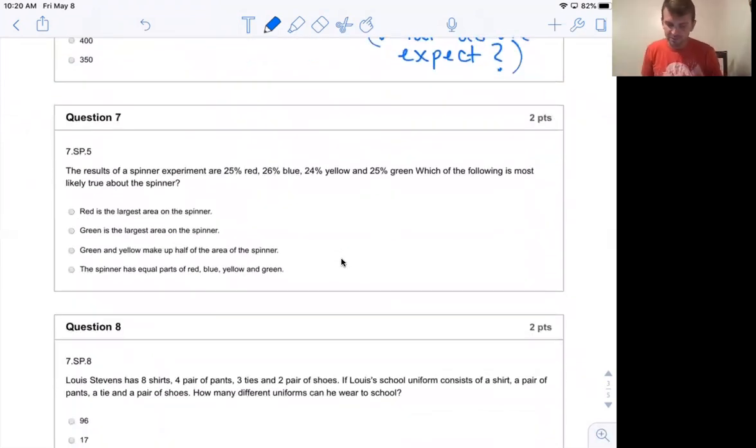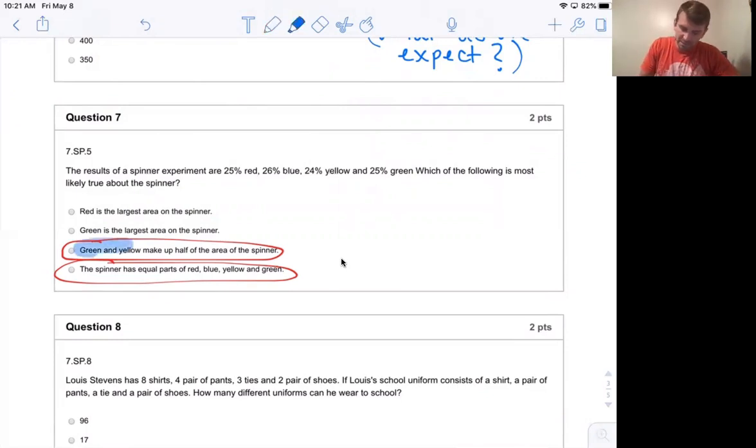Number seven, the results of a spinner experiment are 25% red, 26% blue, 24% yellow, and 25% green. Which of the following is most likely true about the spinner? So there's a couple of questions on our answers that are really, really close. Those are that green and yellow make up half the area of the spinner and that the spinner has equal parts of red, blue, yellow, and green. I hope you guys can see how both of these seem like they should be correct. Green and yellow could definitely make up half of the spinner because 24% plus 25% is a total of 49%, which is really close to half. So that could be true, but that's actually not going to be the correct answer on this one.